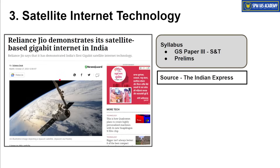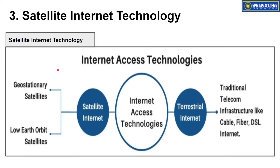The next article is about satellite internet technology, important from GS paper 3 Science and Technology point of view. Internet accessibility in our homes can be of two types: terrestrial internet — coming from the ground — which is what we normally have through traditional cable and optical fiber connections; or satellite internet, where you launch a satellite and it provides internet service.